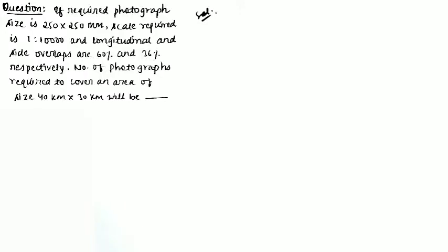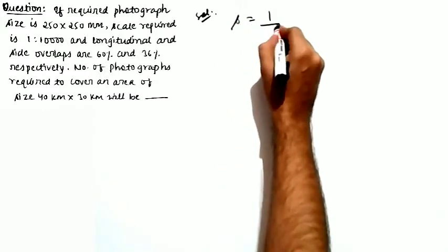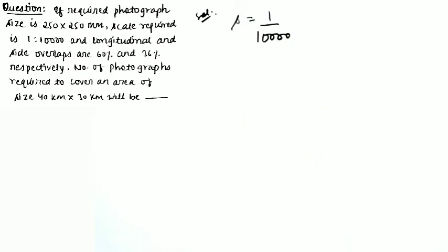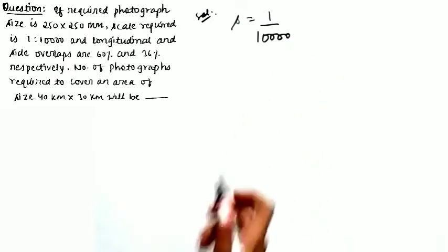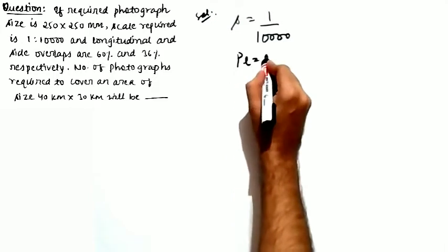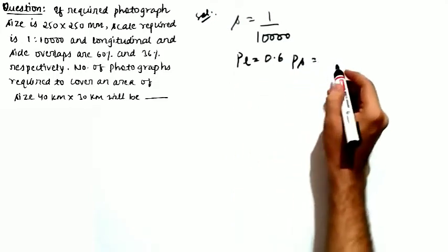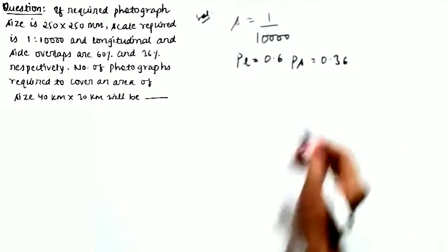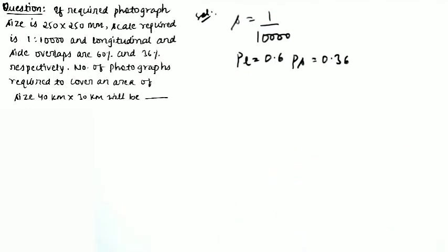Let us begin. The first question: if the required photograph size is 250mm × 250mm, the scale is 1:10,000, the longitudinal overlap PL is 0.6, and the side overlap PS is 0.36, you are asked to calculate the number of photographs required. I have already covered the theory related to this topic but a numerical was important to solve.